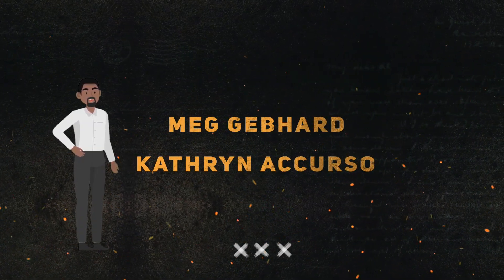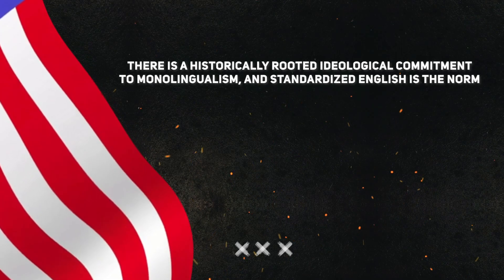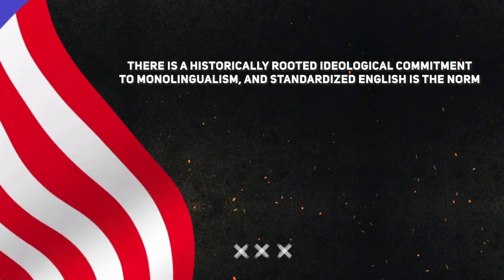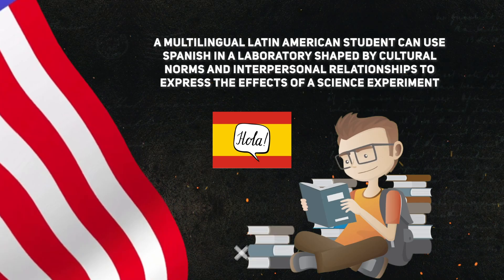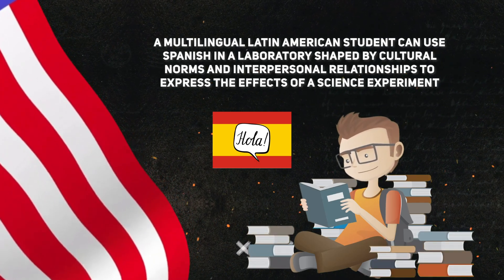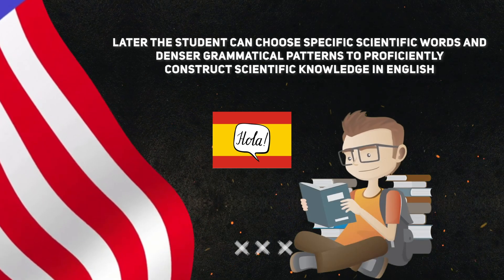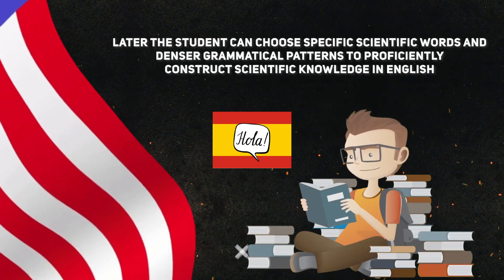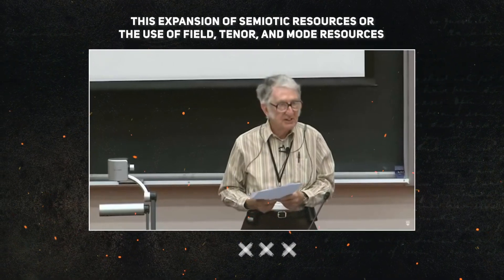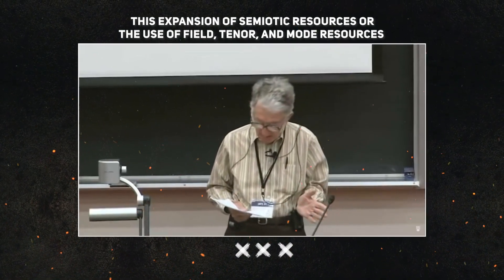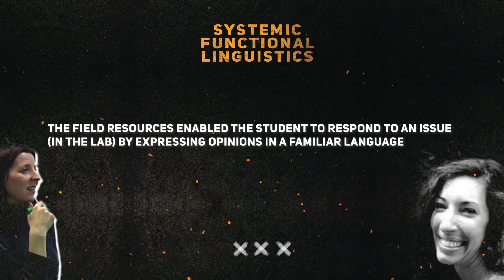Let us look at an example by Gebhard and Accurso. In the U.S., there is a historically rooted ideological commitment to monolingualism, and standardized English is the norm. Unlike public education systems in most countries, a multilingual Latin American student can use Spanish in a laboratory shaped by cultural norms and interpersonal relationships to express the effects of a science experiment. Later, the student can choose specific scientific words and denser grammatical patterns to proficiently construct scientific knowledge in English. According to Gebhard and Accurso, this is expansion of semiotic resources, or the use of field, tenor, and mode resources. The field resources enabled the student to respond to an issue in the lab by expressing opinions in a familiar language.